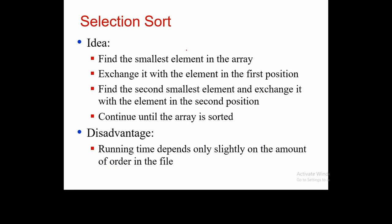The next sorting algorithm is selection sort. The idea of selection sort is: find the smallest element in the array and exchange it with the element in the first position. Then find the second smallest element and exchange it with the element in the second position, and so on. For example, given the list 9, 2, 8, 1, 4, 3, we observe that 1 is the minimum element.